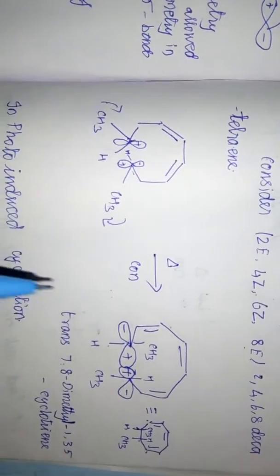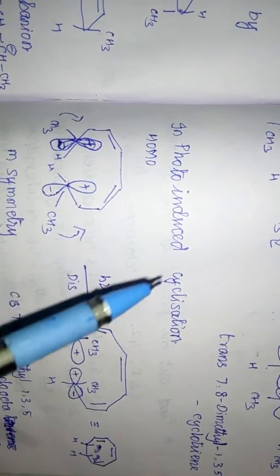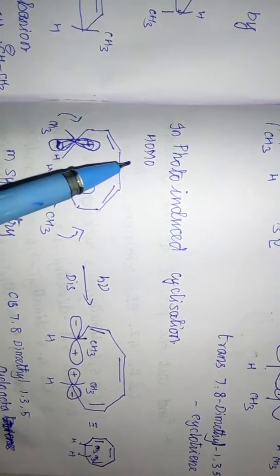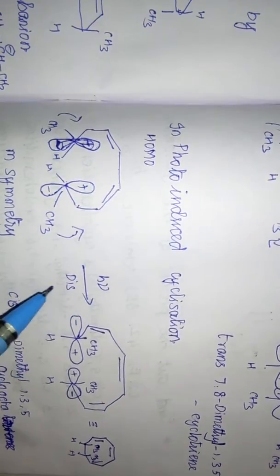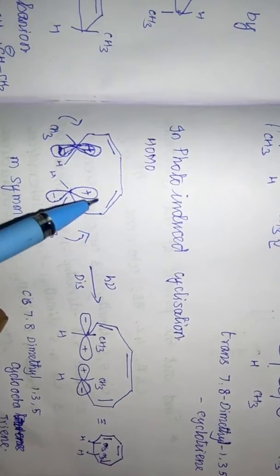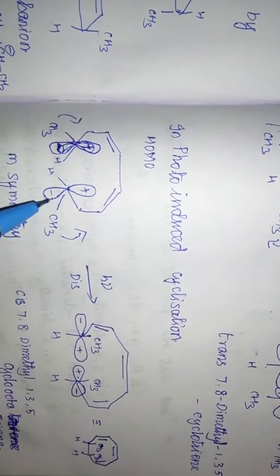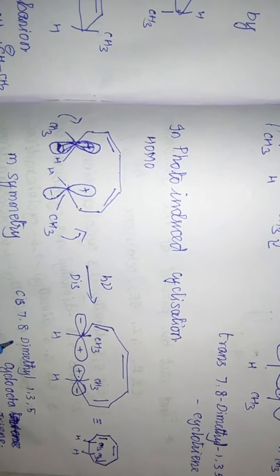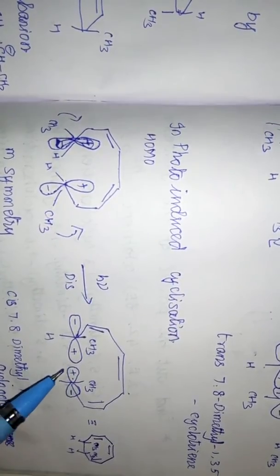Under photochemical conditions for the same molecule, the HOMO has mirror (M) symmetry. Disrotation applies: one carbon rotates clockwise and the other anticlockwise. Both methyl groups go up, giving the cis isomer — cis-7,8-dimethyl-1,3,5-cyclooctatriene.